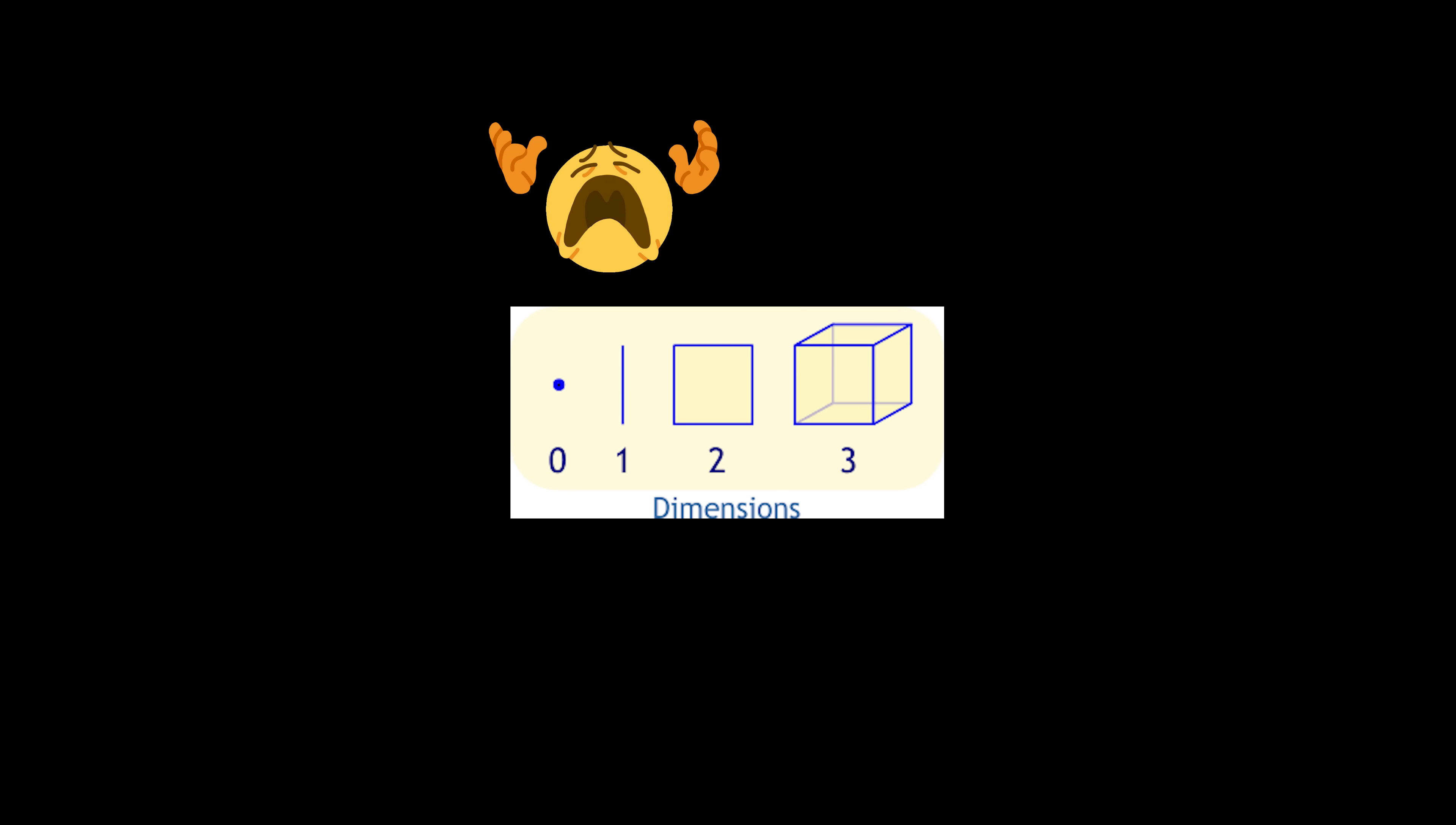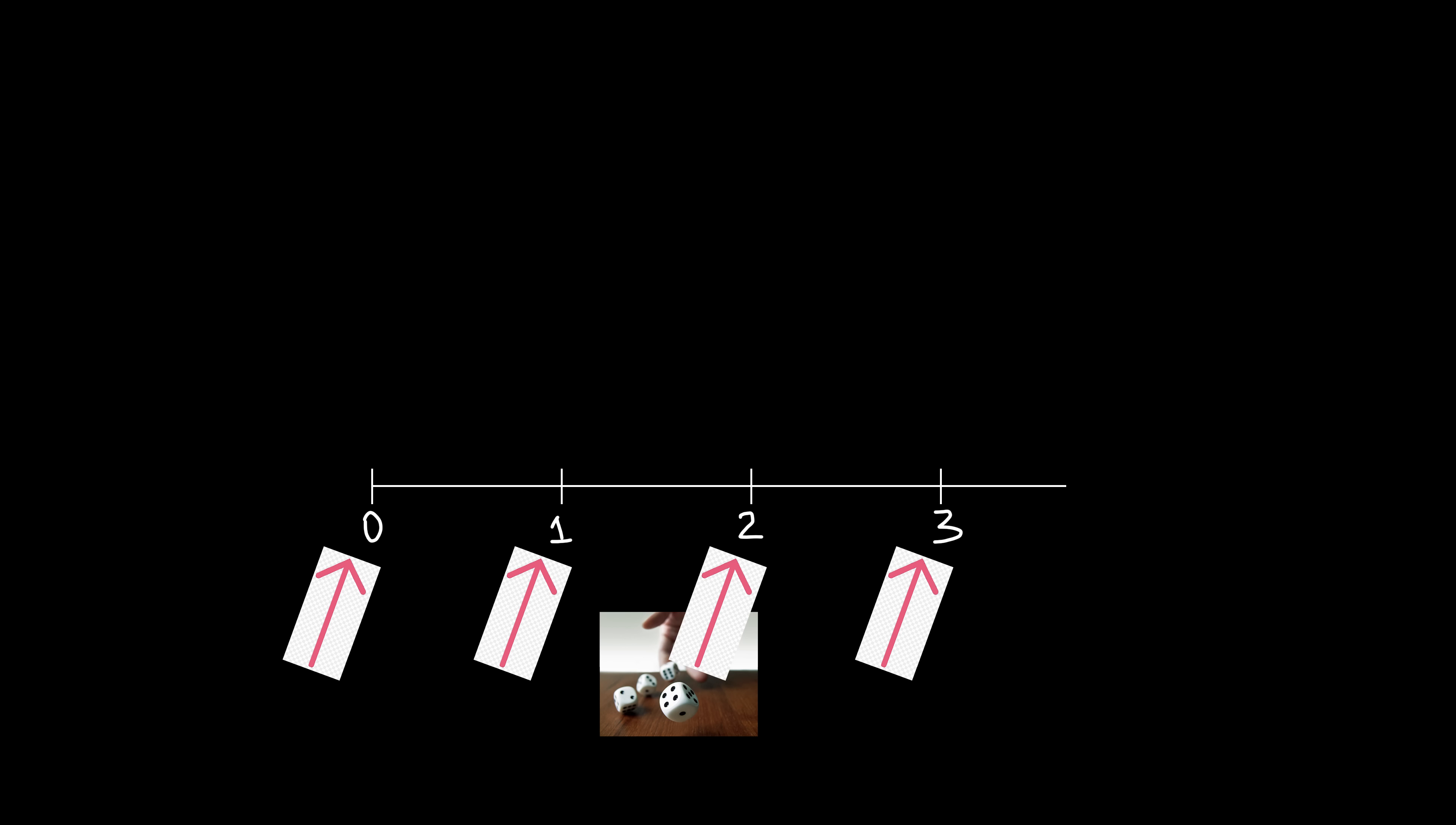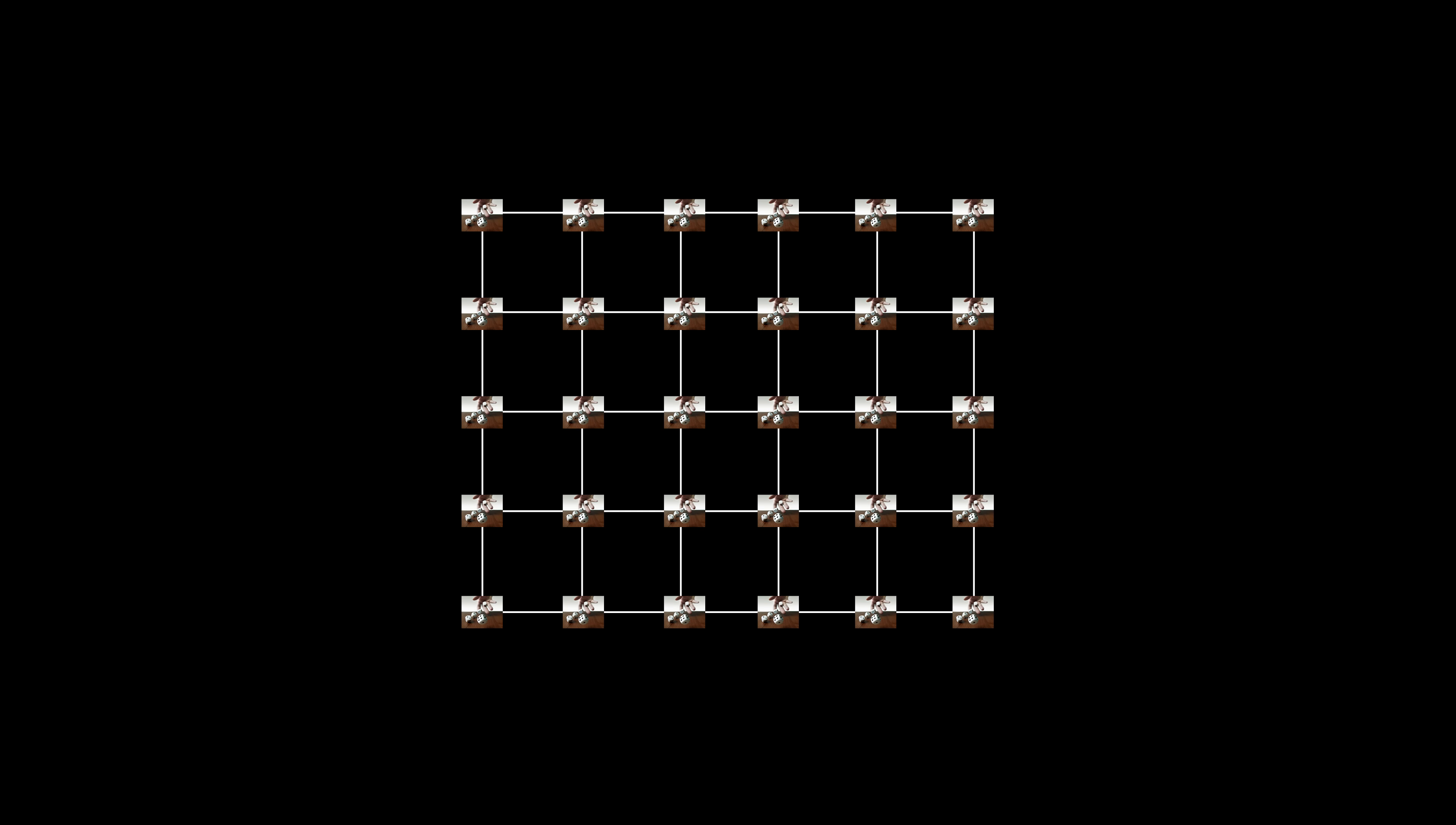We need at least two dimensions to create textures. Our noise function will now take an x and y value as input, and we expand our number line into a two-dimensional lattice. Just like we assigned random numbers to each integer on the number line, each point on our lattice grid is hashed.